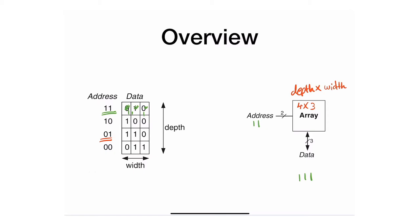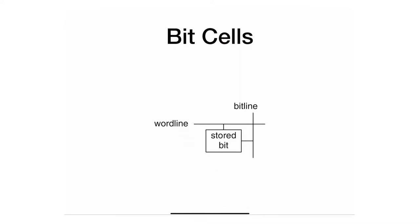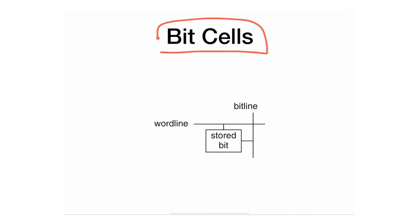Of course, what I showed is a very simplistic way — you might have enable signals, write enable, read enable, and so forth. But in general, this is how we do it. All of these memory arrays differ in technology — they differ in the way you actually construct or store each one of these bits. We're going to assume that each bit is stored in what we call a bit cell. The bit cell can store a one or zero, and the different physical elements that construct that bit cell constitute a different memory type — RAM, ROM, and so forth.